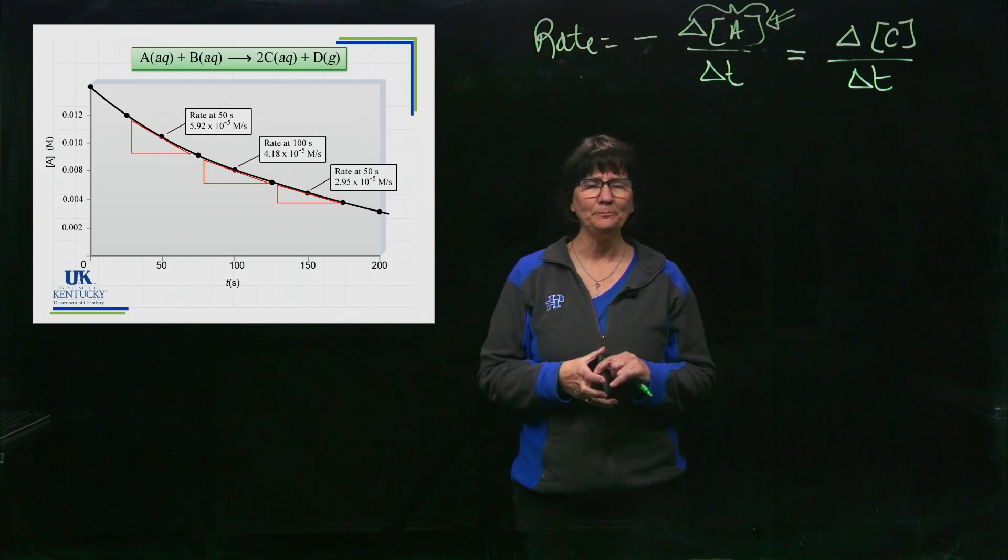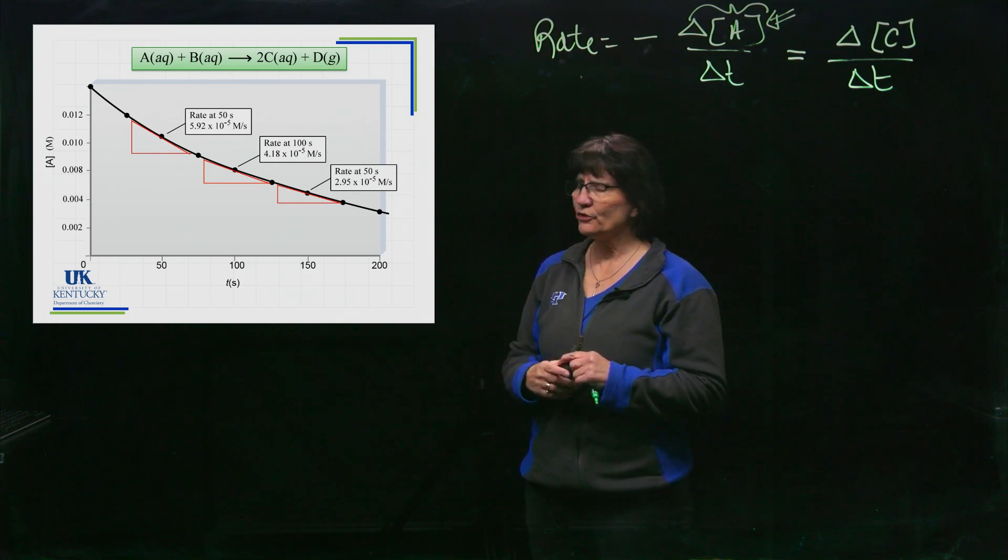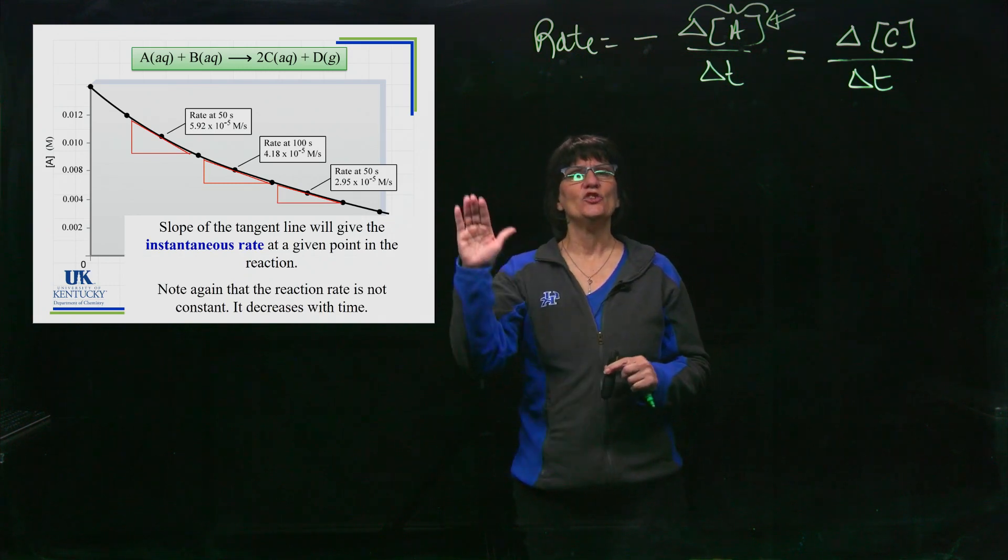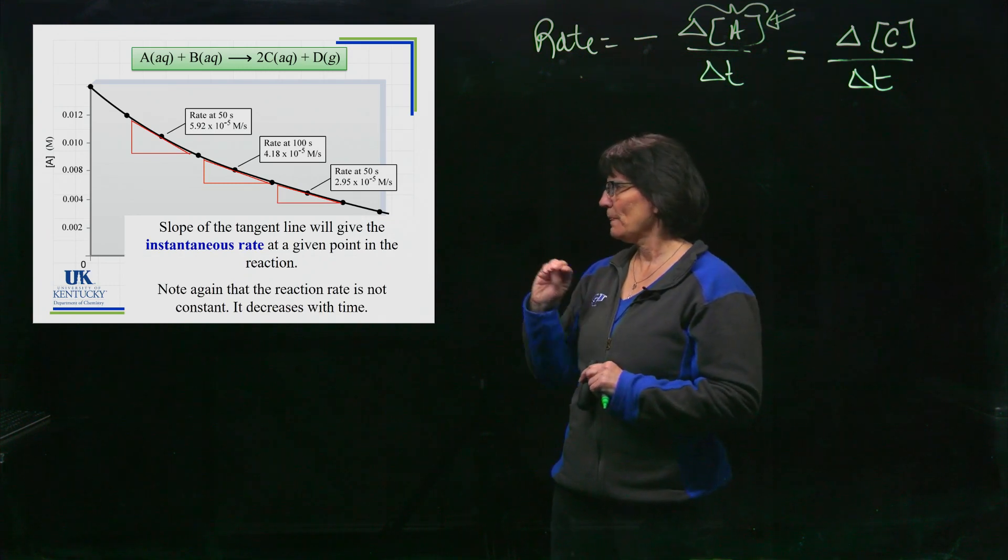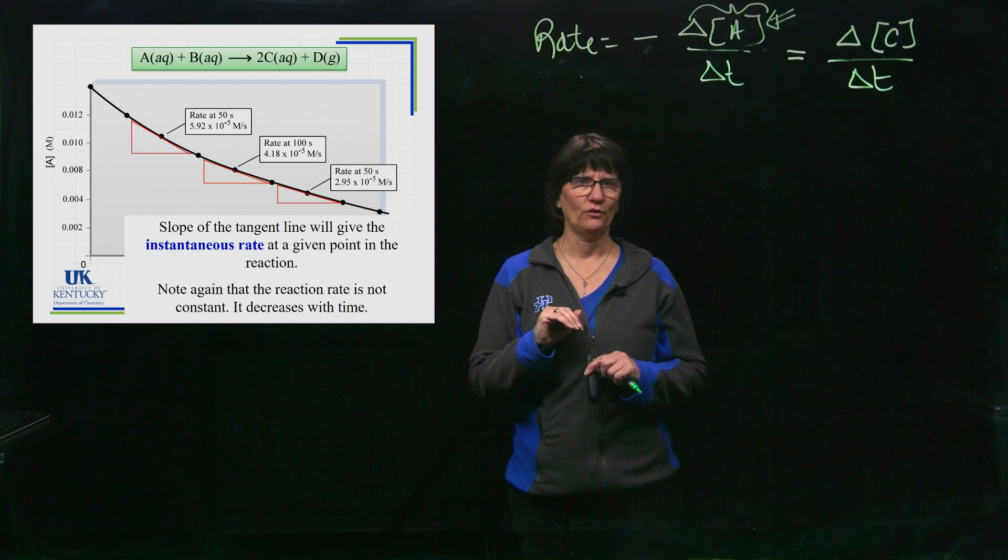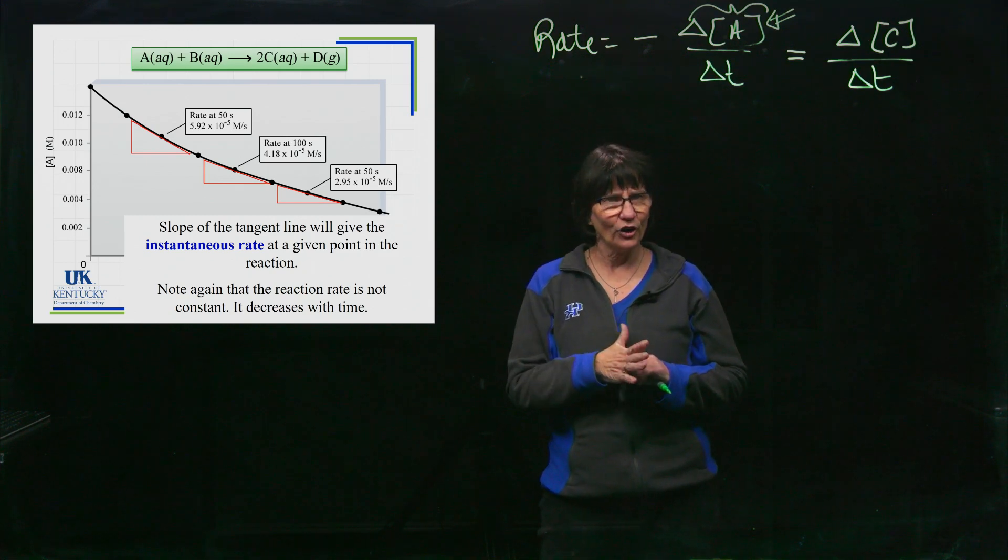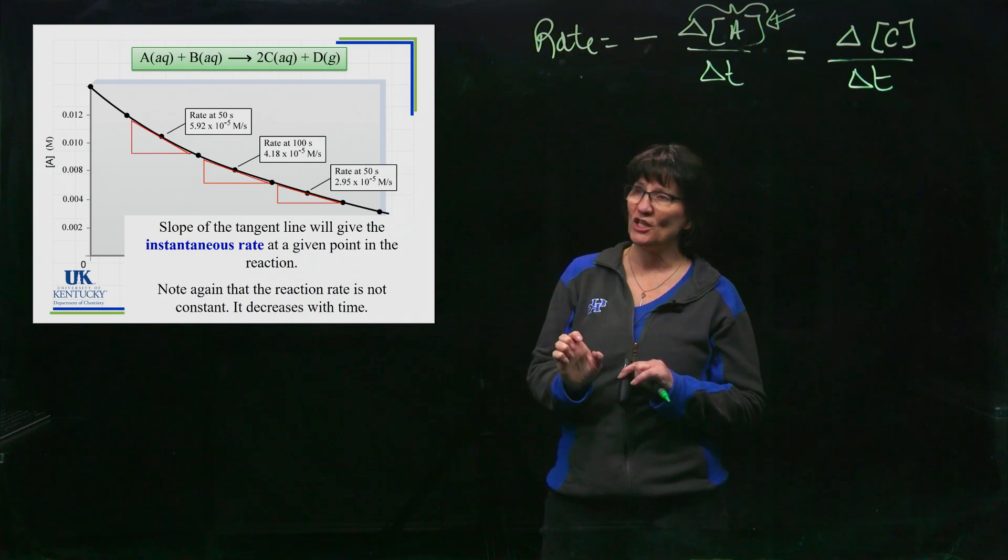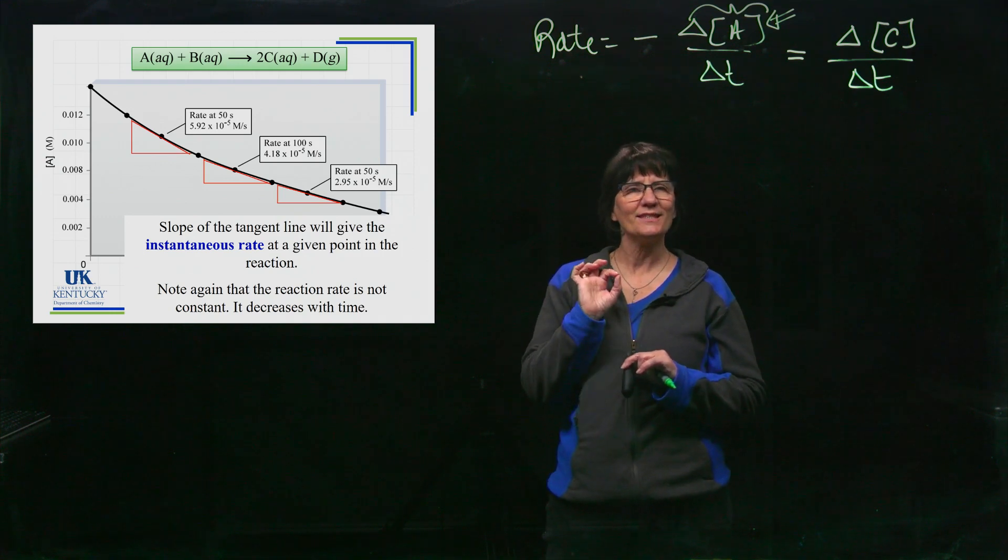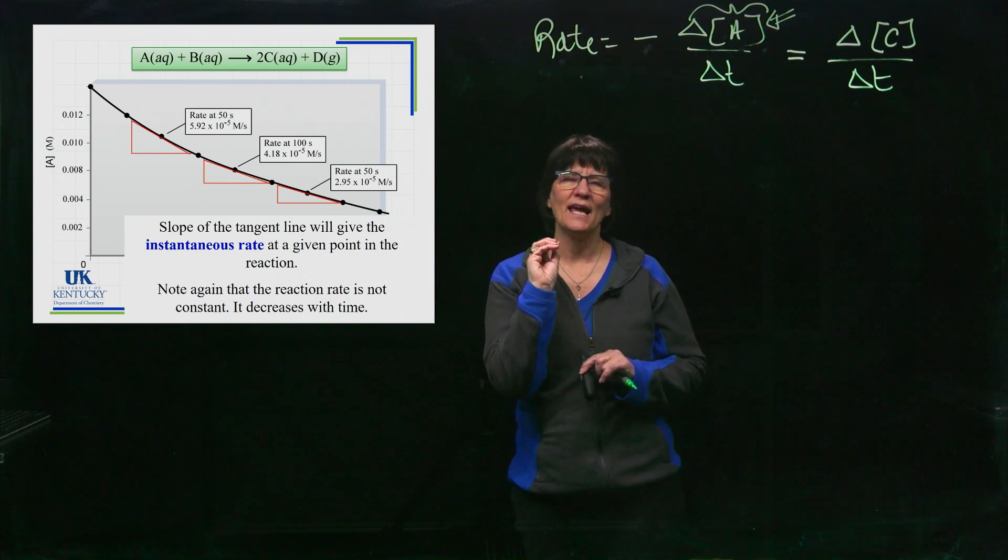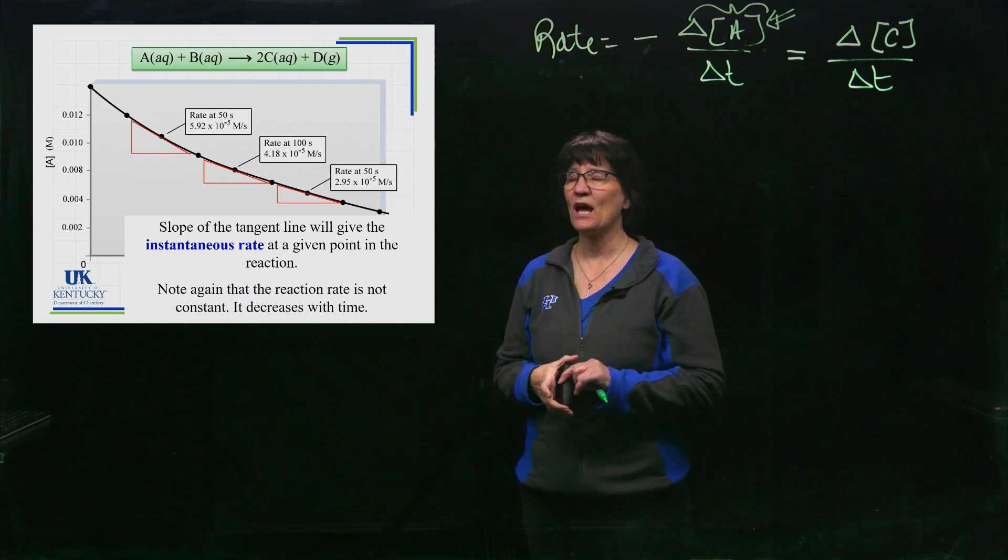But you can also determine them right there at an instance, and the way you do that is you determine the slope of the tangent line to that curve. So you take the tangent line of the curve, you figure out its slope, change in Y over change in X, and whatever that change in that slope is of that tangent line, that would be an instantaneous rate. At that instance is how fast it is going.